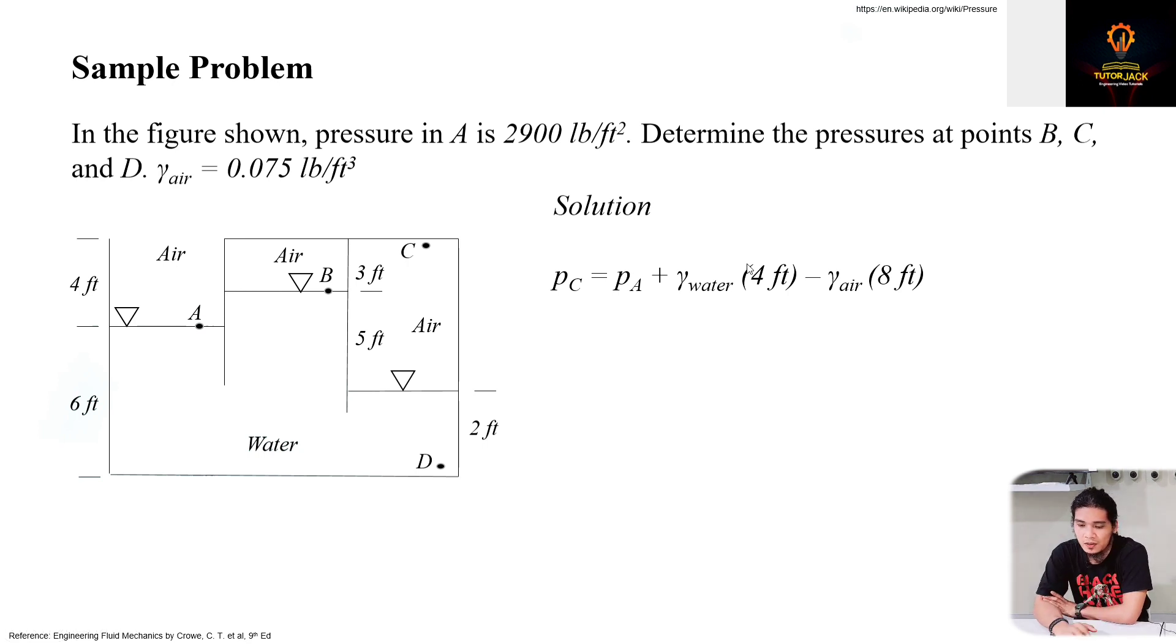Earlier, 6 minus 7 was the difference, right? So for this, the difference in elevation between point A and this point is 6 minus 2, so that's 4 feet. Then from this particular point, we go up towards C.